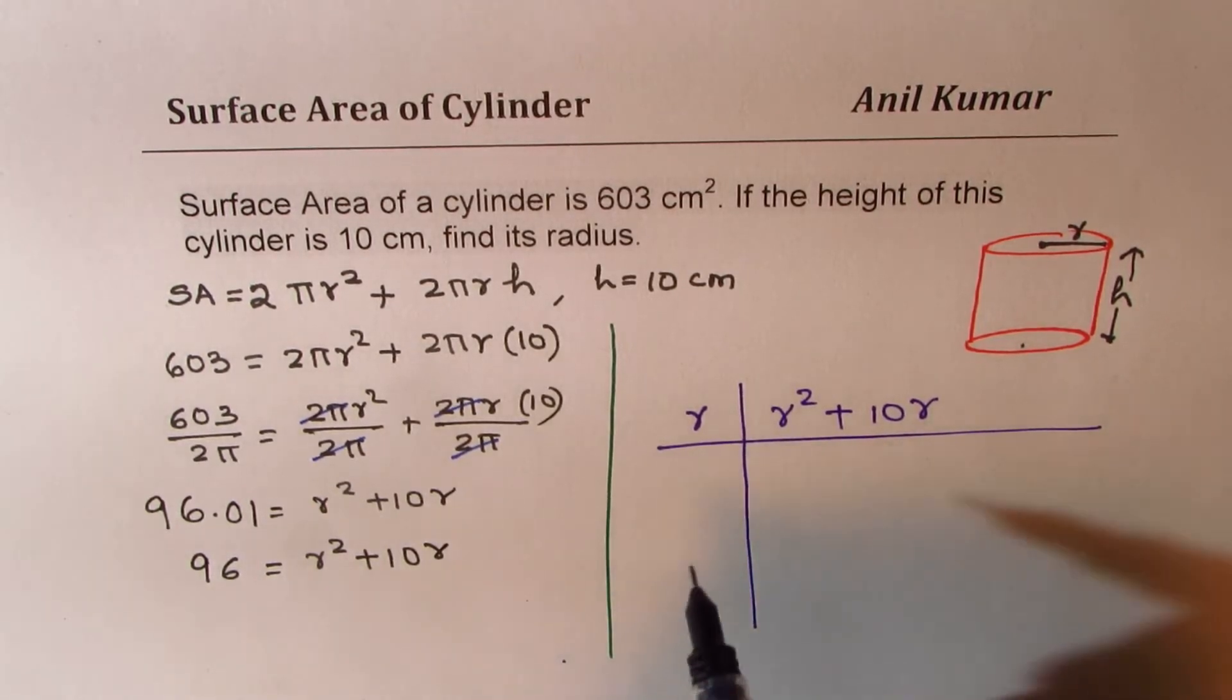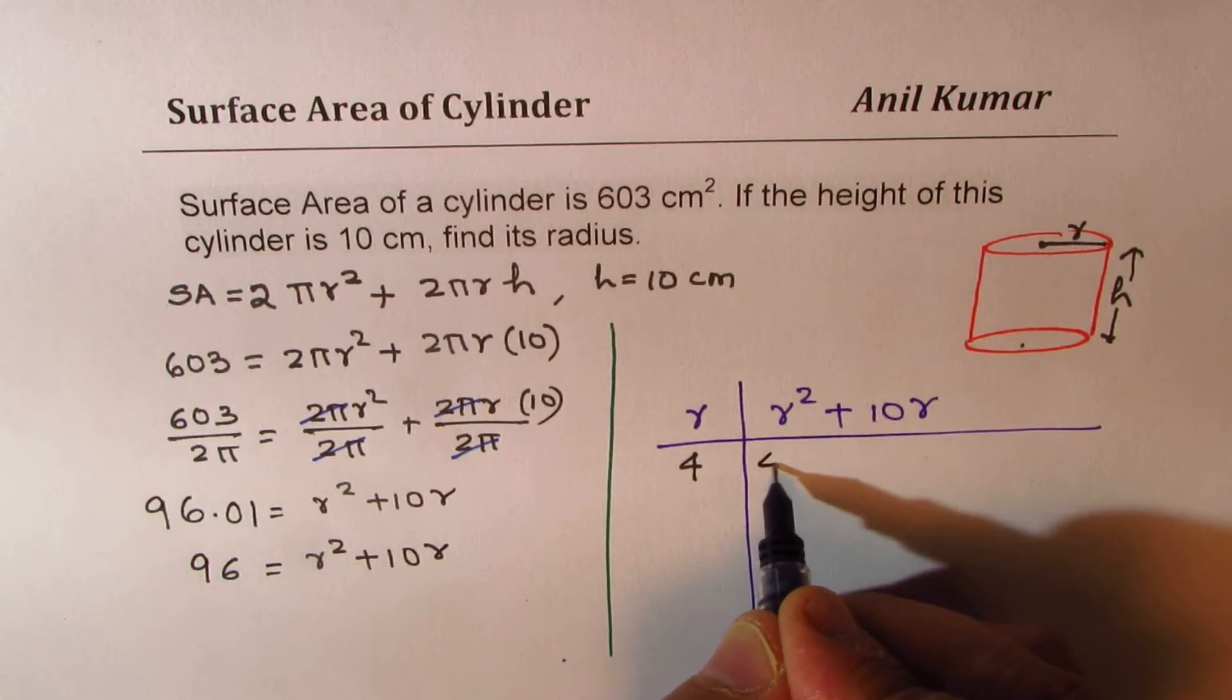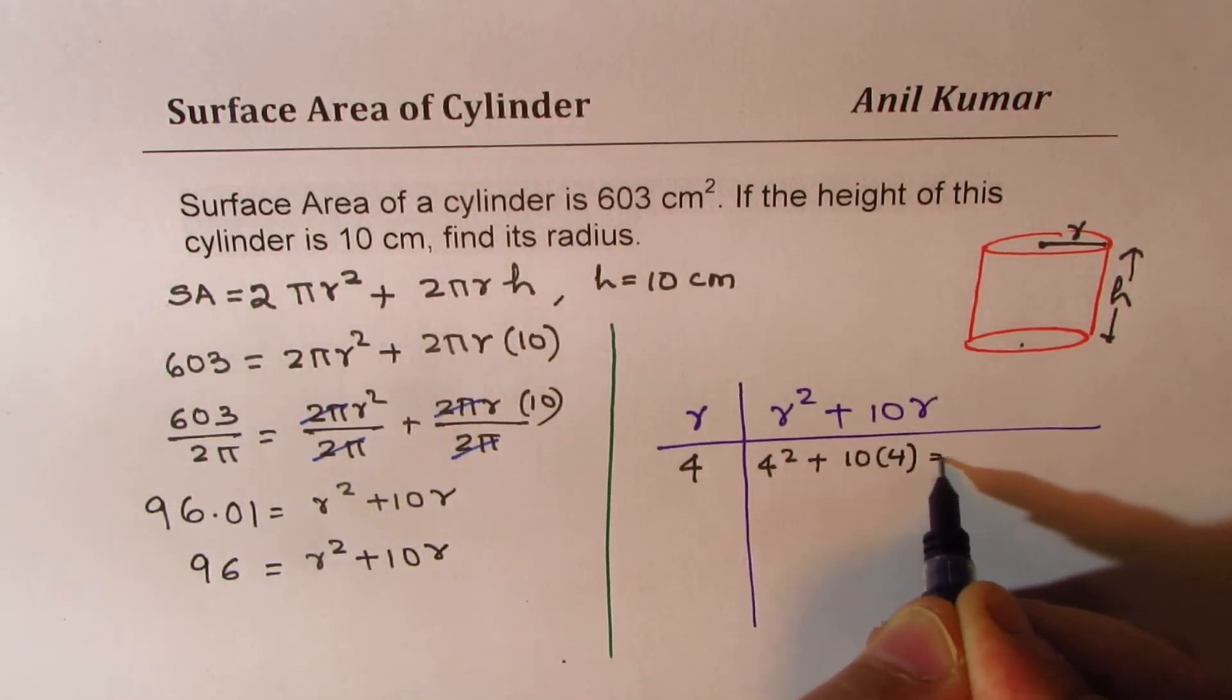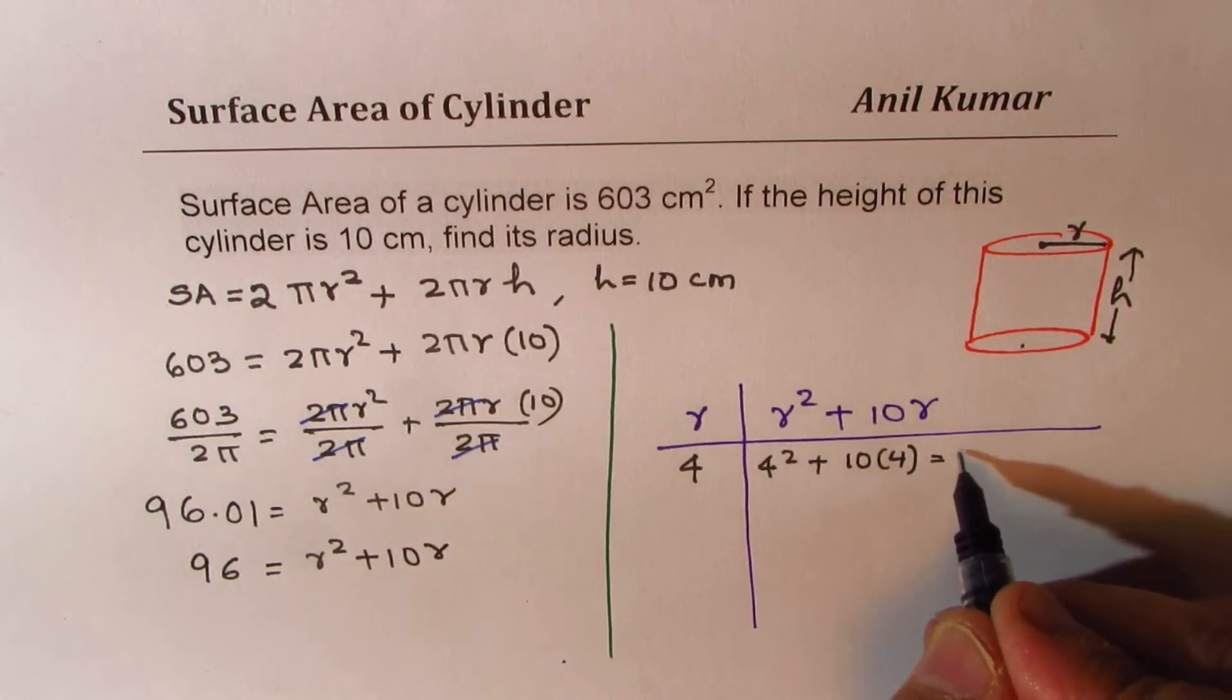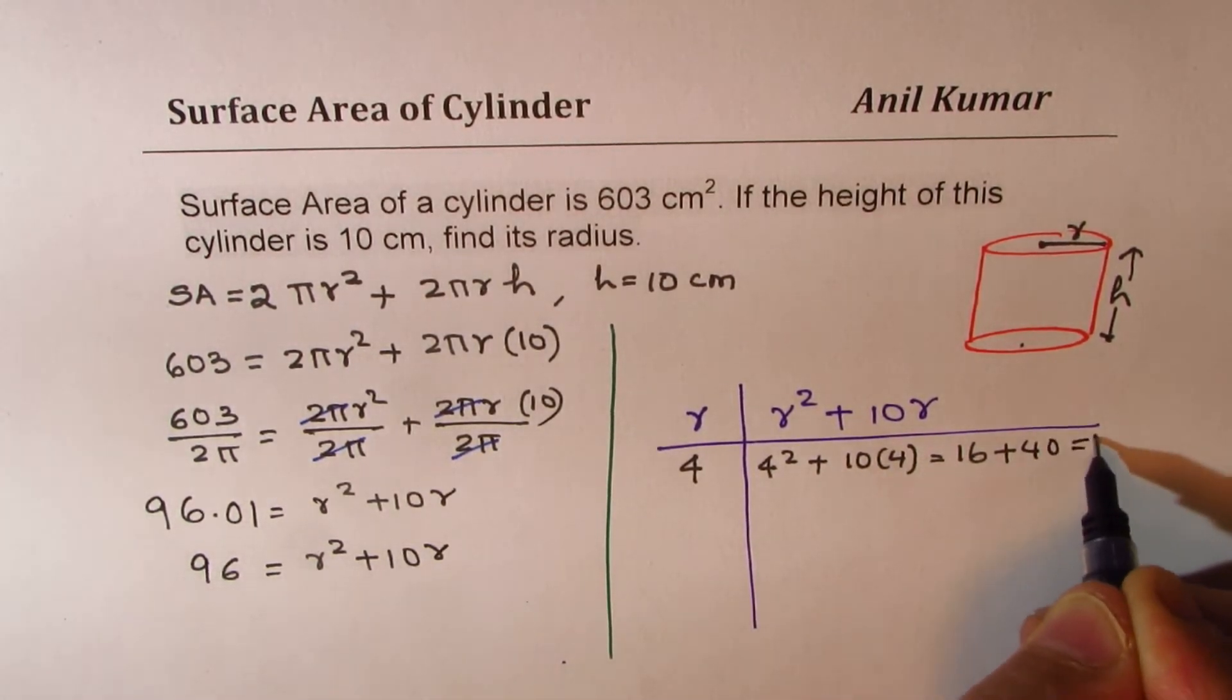Well, let's put some value at random to start with. Let's say r equals to 4, then we get 4² plus 10 times 4, which is what? 4² is 16, you can use calculator. 16 plus 40, that gives you 56.